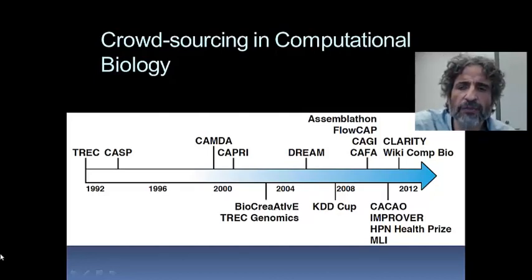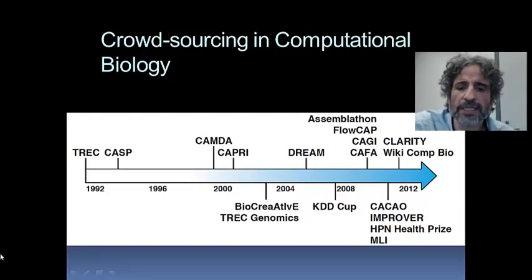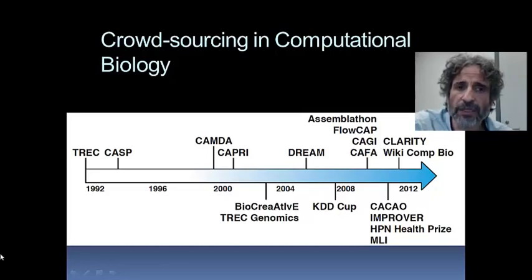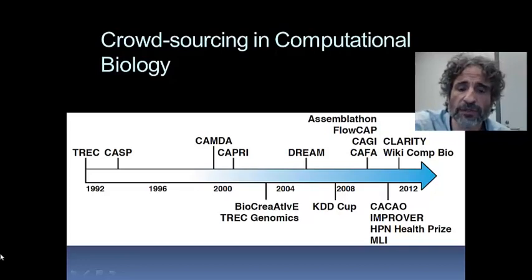I invite you to go to the website of CASP because it's a paradigmatic example of using crowdsourcing to solve a problem with high levels of rigor. Over subsequent decades, many efforts came to light to solve different problems in computational biology. The one I am particularly fond of, having been the founder, is DREAM — this concept of verifying whether our algorithms give correct answers when it comes to network inference. The D is for dialogue, meaning we want to collaborate because the problem is too hard for anyone to solve in isolation.